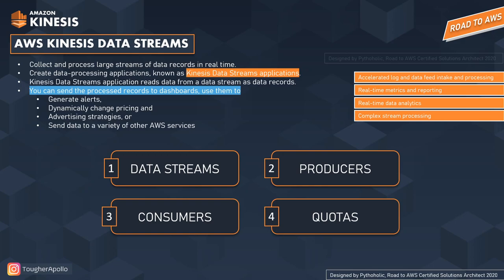The first concept is data streams. Kinesis Data Streams inserts a huge amount of data in real time, and every unit of data stored is called a data record. Data streams is a group of data records, and data records in data streams are distributed into shards. You can imagine shards as like a pipeline.